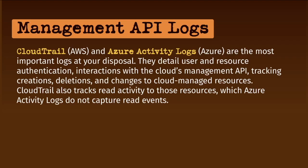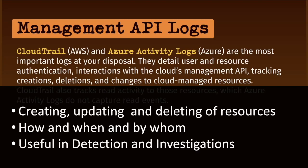In Azure, this is called the Activity Logs. They document the creation, updating, and deleting of resources. In CloudTrail, they'll also describe the gets and lists of those kinds of resources. So we're not just talking about virtual machines and databases, but also about users, keys, securities, secret tokens, and things like that — all being tracked in the management API logs.